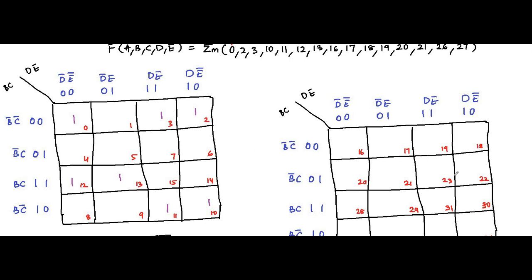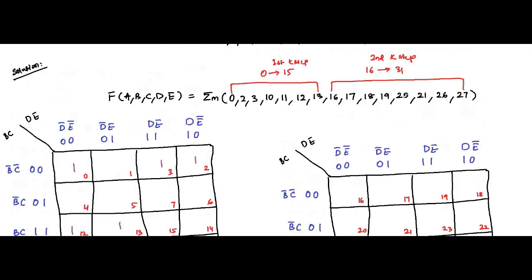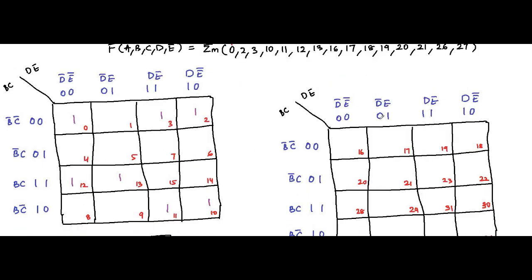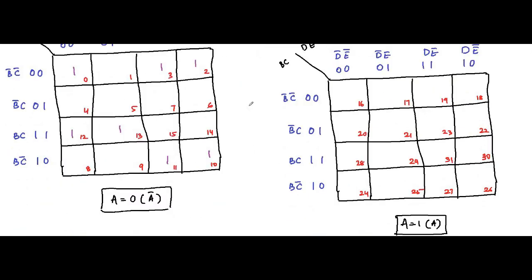We plot from the groups. In the 16 to 31 range, the values are 16, 17, 18, 19, 20, 21, 26, 27 — so we plot cells 16, 17, 18, 19, 20, 21, 26, 27 in the second K-map.